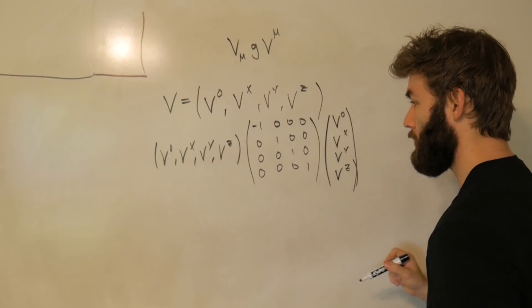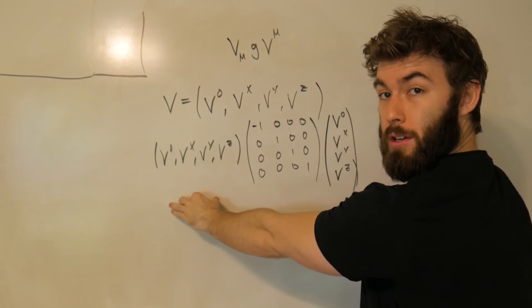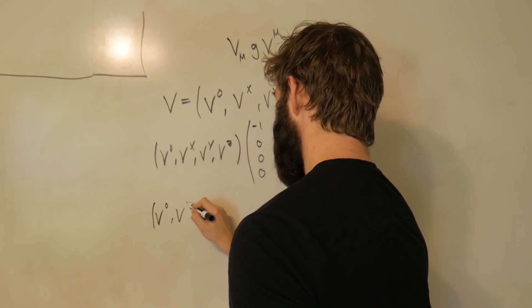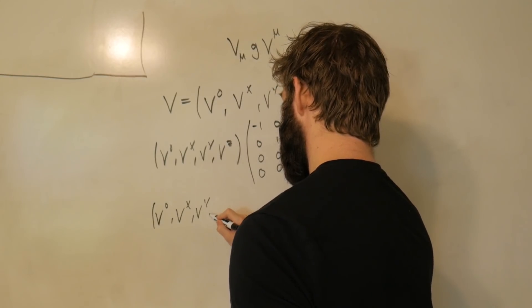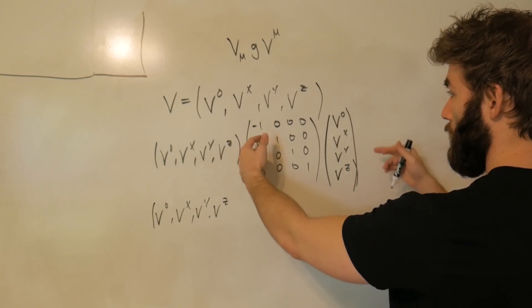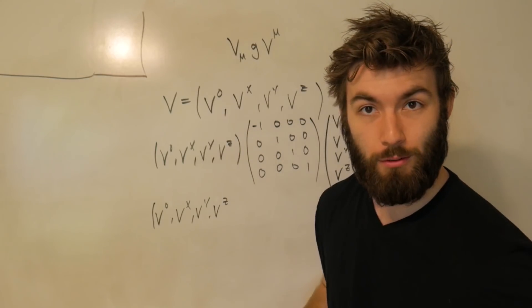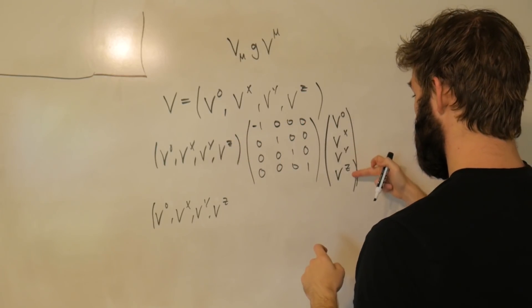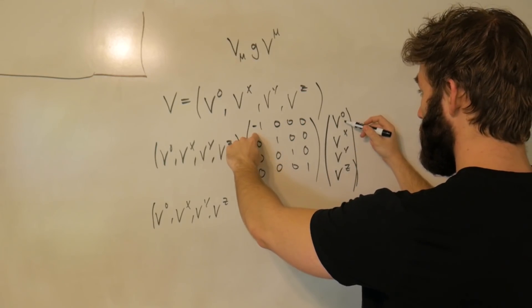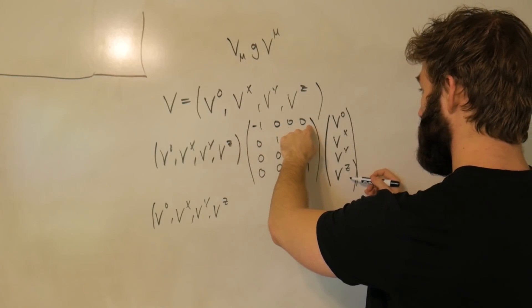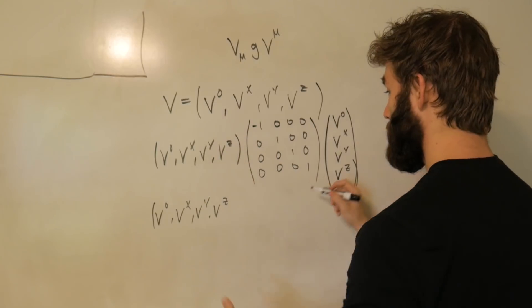And from here we're just going to do matrix multiplication. So we're just going to take the inner matrix times the right-hand matrix, and we're just going to rewrite this part here. So this is just going to be v₀, vˣ, vʸ, vᶻ. And then here, if we do just normal conventional rules of matrix multiplication, it's across and down. So minus one, v₀, plus zero vˣ, plus zero vʸ, plus zero vᶻ. That's just going to give us a minus v₀.